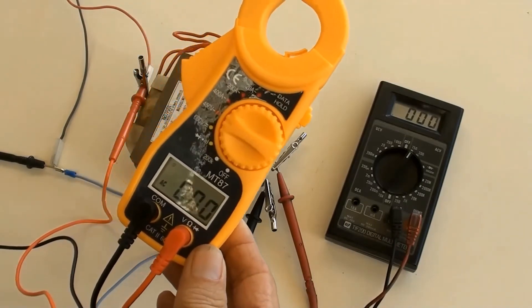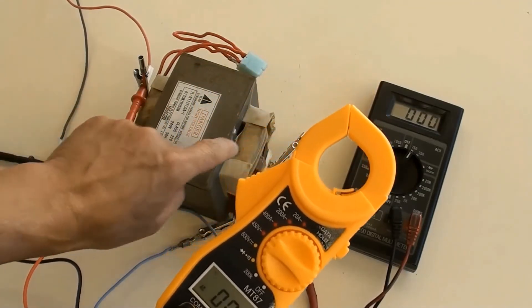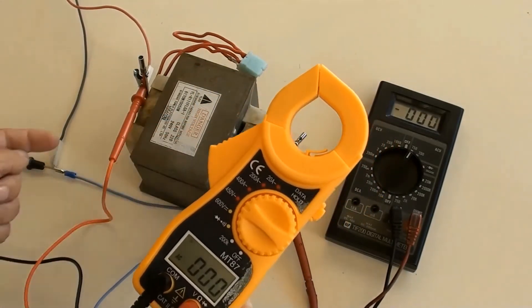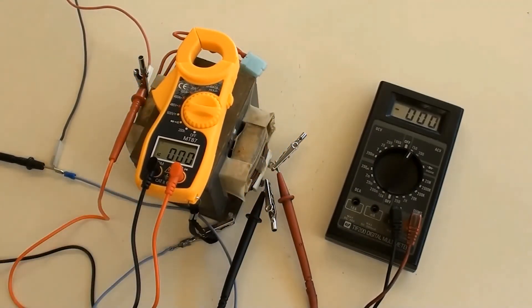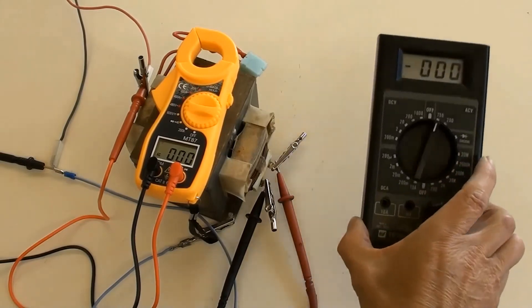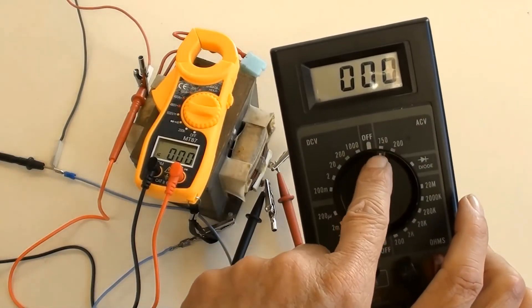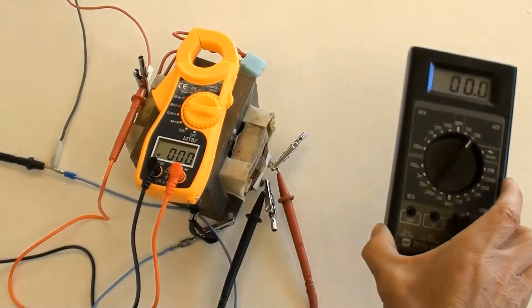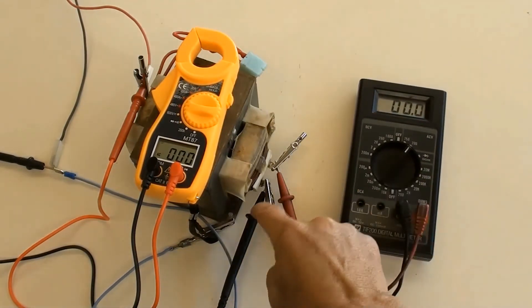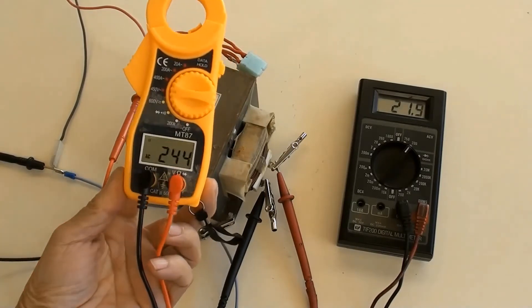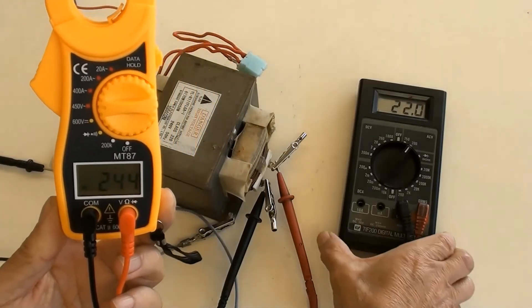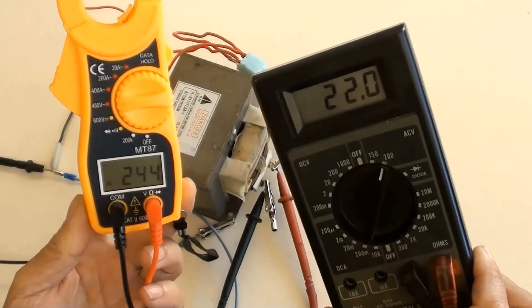In order to work out C, the clamp meter on the left is connected to the transformer's secondary winding in AC 450 volt position. The multimeter on the right is connected to the transformer's primary winding in AC 200 volt position. Switched power on - the clamp meter on the left showed 244 volts and the multimeter on the right showed 22 volts.